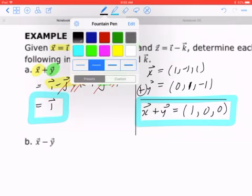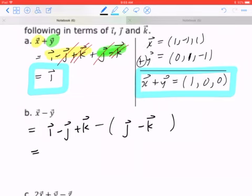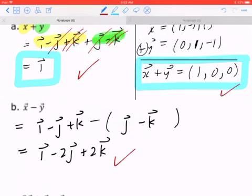Part B, x minus y. So, again, I'm just going to go back to the first method for now. I'm going to copy x. That's going to be i minus j plus k minus, don't forget the brackets, j minus k. Here comes the final answer, a little bit of mental math. i, you copy. Negative j minus j will be negative 2j. k minus negative k is k plus k, so it's going to be 2k, just like that.